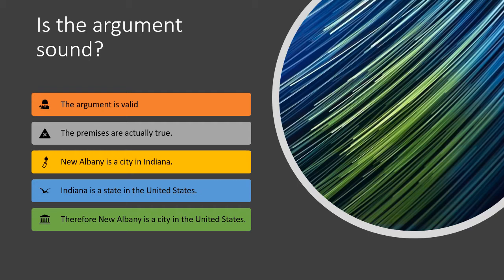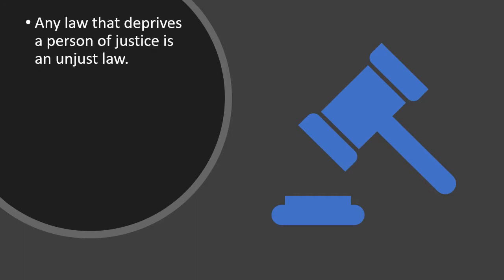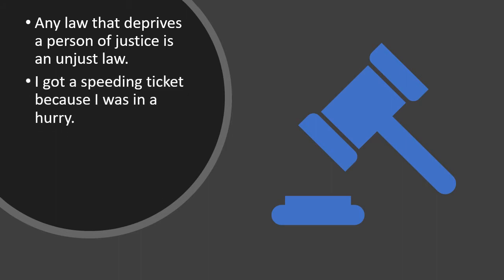Let's look at variations of these arguments — starting with an invalid argument that may still be somewhat convincing. The first premise: any law that deprives a person of justice is an unjust law. Most people can agree with that — if a law deprives a person of justice, by definition it's an unjust law. It's not very hard to agree with that statement.